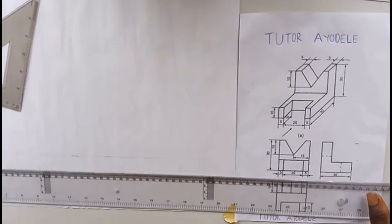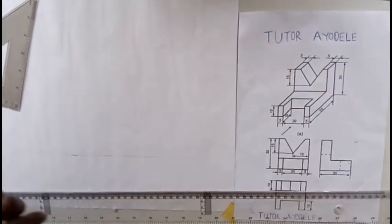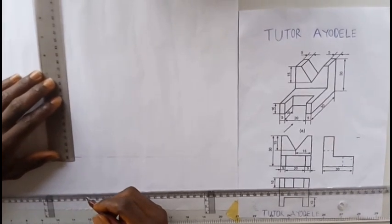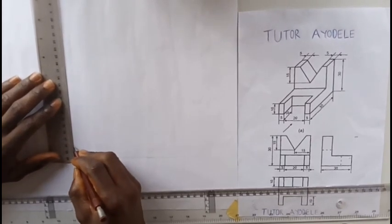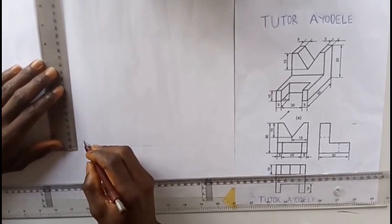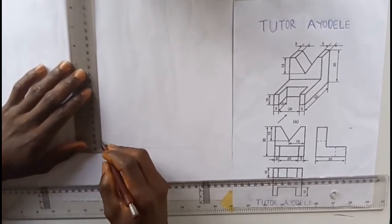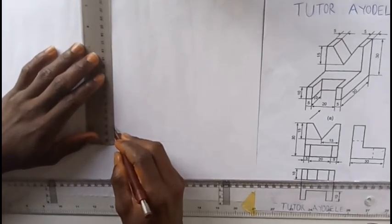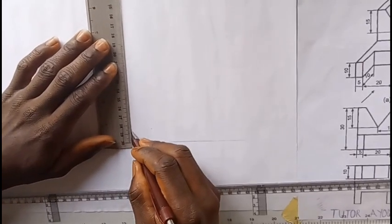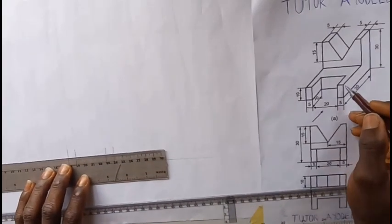Now on this line we are going to measure this distance here which is 10. So in the ratio 2 to 1, we are going to be measuring 20. We just close the tops.